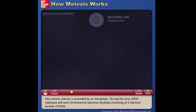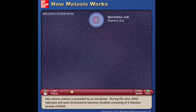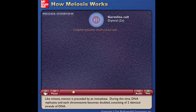Like mitosis, meiosis is preceded by an interphase. During this time, DNA replicates and each chromosome becomes doubled, consisting of two identical strands of DNA.